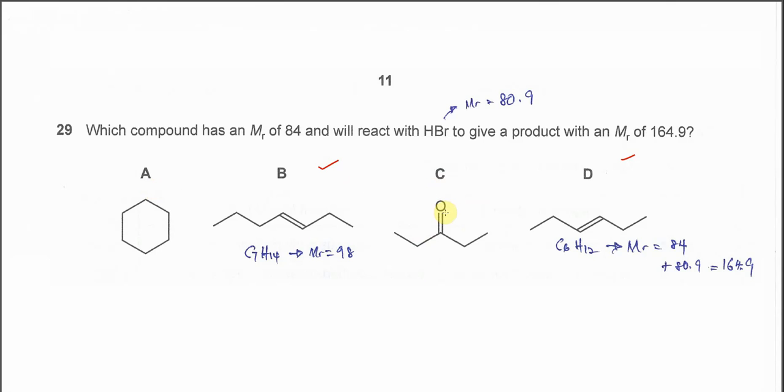And for this one, this is a ketone, pentanone (1, 2, 3, 4, 5). So ketones will not really react with HBr also. So A and C are out.